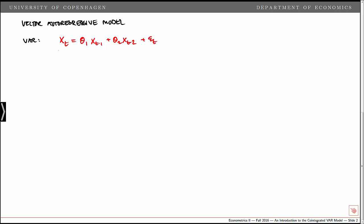Note that xt is a p-by-1 vector instead of a scalar. We have, for example, three variables: consumption, income, and wealth. The lag of xt is also a p-by-1 vector, and we have a p-by-p coefficient matrix theta1. Likewise, theta2 is a p-by-p matrix, with xt minus 2 being a p-by-1 vector and epsilon t a p-by-1 vector. We assume epsilon t follows a multivariate Gaussian distribution with mean zero and covariance matrix omega, where omega is a p-by-p variance-covariance matrix.